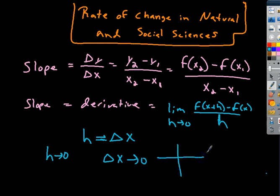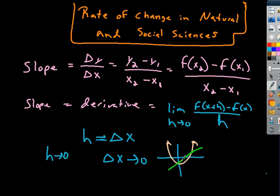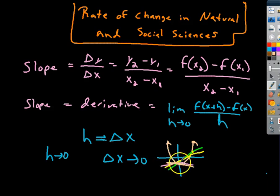In the graph, what we were really deciding was: if I had some function and I was trying to find the derivative or the slope at some point, I could choose two points and get a secant line. If I chose points closer together, I'd get a new line each time. Eventually, choosing points very close together, I could find the slope at that place. For example, if x was 7, the other point might be 7.001. That's what we mean when we say h approaches 0. This lesson is about applying this in application settings, in the natural world.